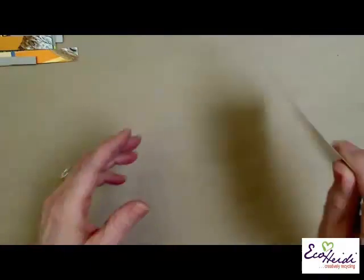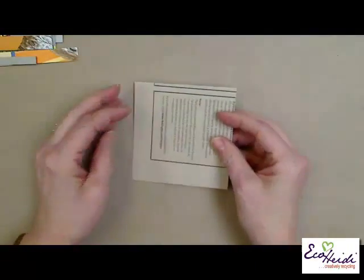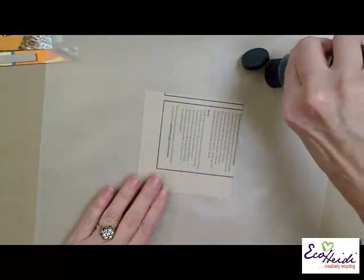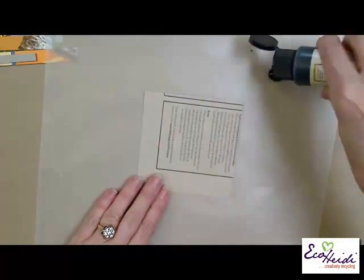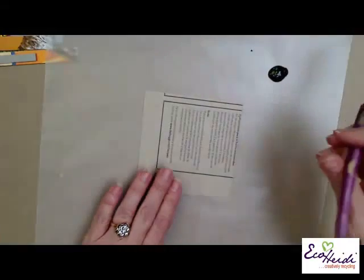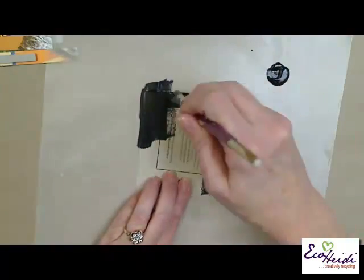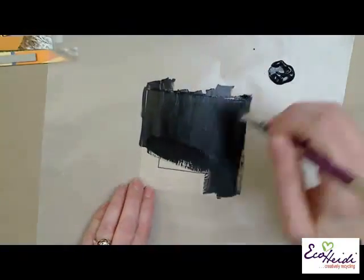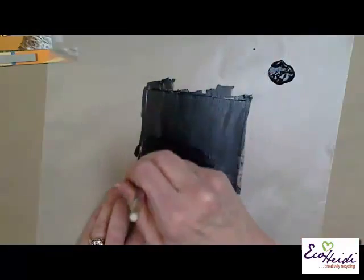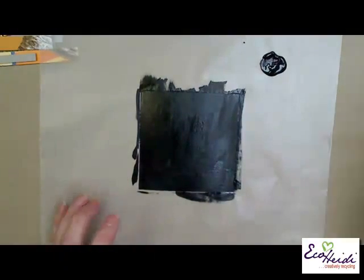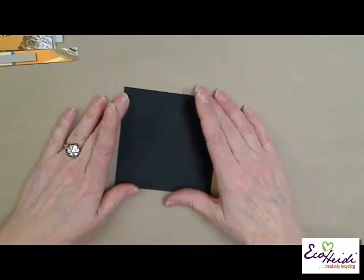First thing you need is a piece of cereal box, and we're going to turn it over, and on the back or the inside, we're going to paint it black. Just use an acrylic paint and just brush it on until you have it all covered. Now, I'm going to put this one aside because I already have one dry.